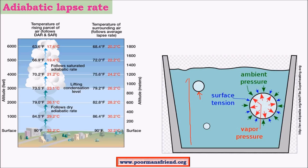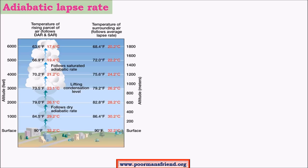Buoyant force is the one that keeps ships or any other floating object on water. This same buoyant force pushes the bubble upwards, so the bubble moves from bottom to top. We have seen both the increase in volume and the movement of the bubble from bottom to top. Now let us see how this is related to adiabatic lapse rate.